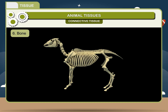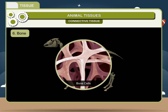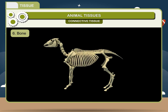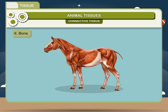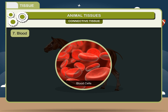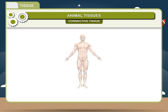6. Bone: It is a hard connective tissue and is the major part of vertebrate animals. It is composed of living tissue such as bone cells, fat cells, blood vessels, and non-living materials like water and minerals. 7. Blood: It is a liquid connective tissue which is present in the entire body. It is a vital fluid found in humans and other animals that provides important nourishment to all body organs and tissues.